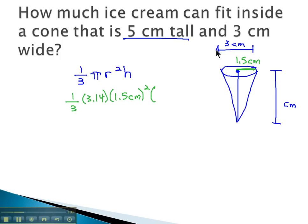It was 5 centimeters tall, times 5 centimeters. And we end up with an order of operations problem we can solve to find the volume. Order of operations says to do exponents first, so we have one-third times 3.14, times 1.5 squared is 2.25 square centimeters, times 5 centimeters.